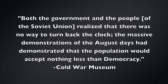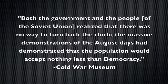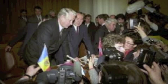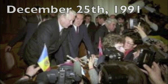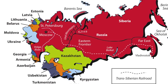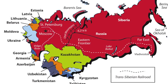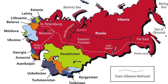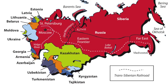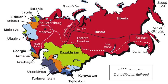The massive demonstrations of the August days had demonstrated that the population would accept nothing less than democracy. After communism fell in Germany, the leaders of the fifteen republics that made up the Soviet Union had a meeting in Moscow on December 25, 1991. On the same day, Mikhail Gorbachev stepped down as leader of the Soviet Union. During this meeting, 14 of the fifteen republics announced they would no longer be part of the Soviet Union — Estonia, Latvia, Lithuania, Belarus, Moldova, Ukraine, Armenia, Azerbaijan, Uzbekistan, Turkmenistan, Tajikistan, Kyrgyzstan, Kazakhstan, and the Russian Federation. The only republic that did not declare independence was Georgia. Because of the majority of republics leaving, the Soviet Union fell.